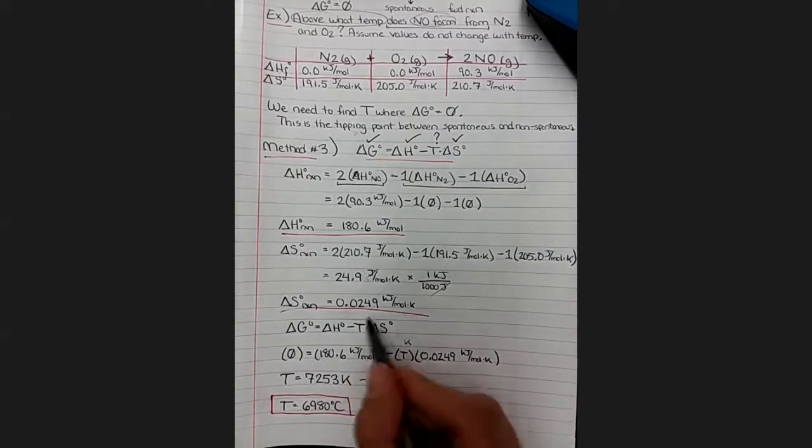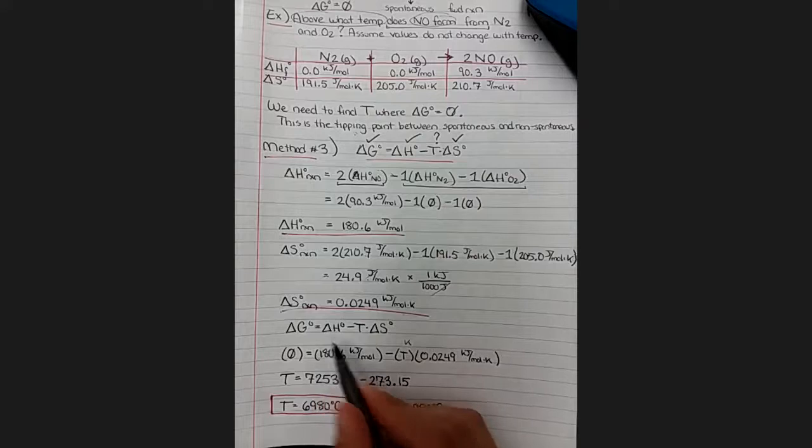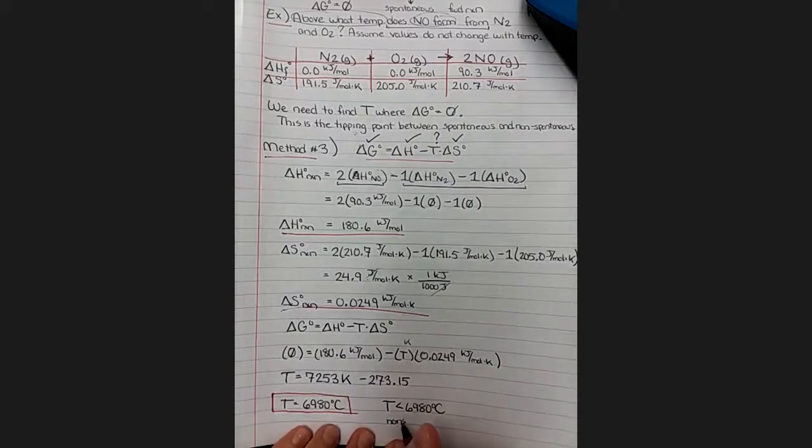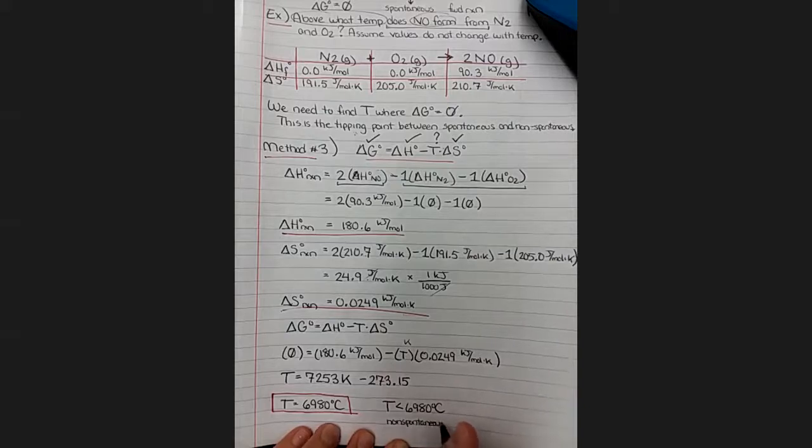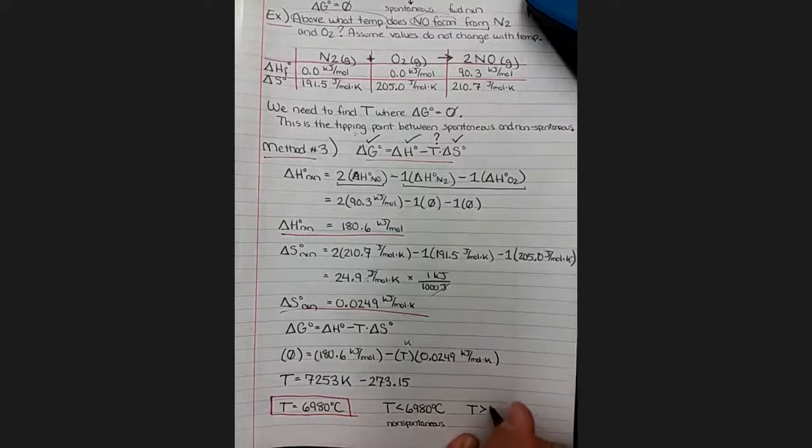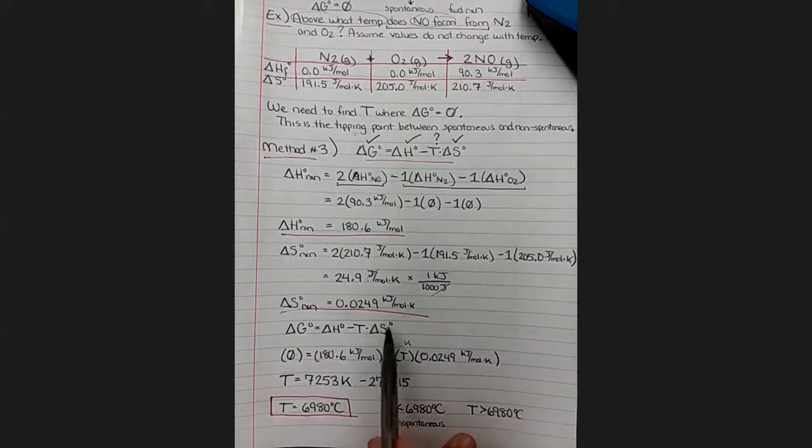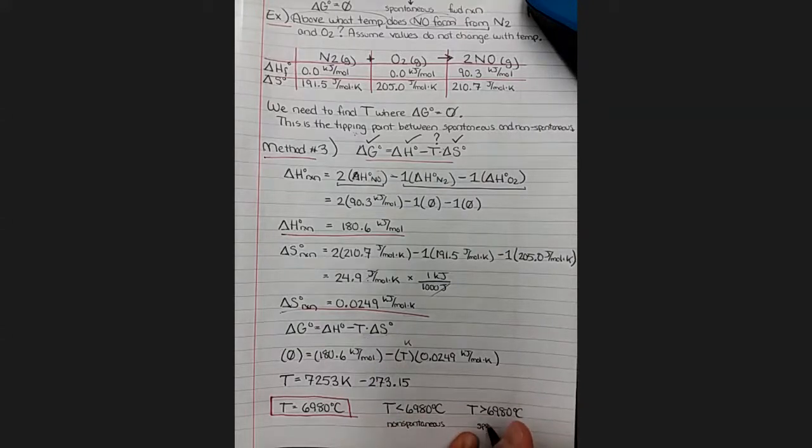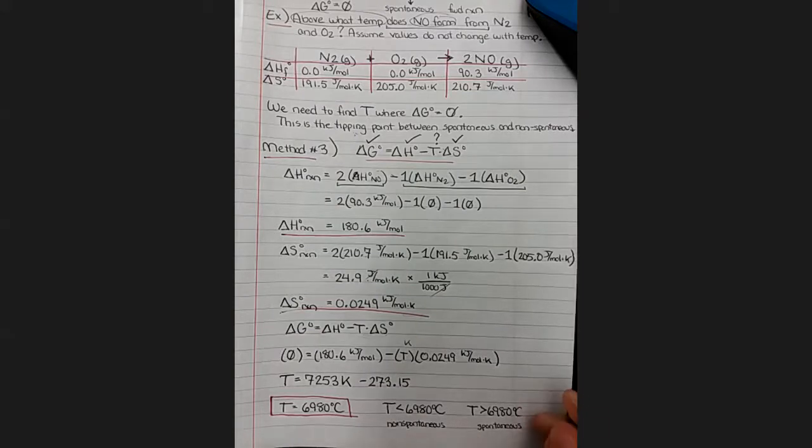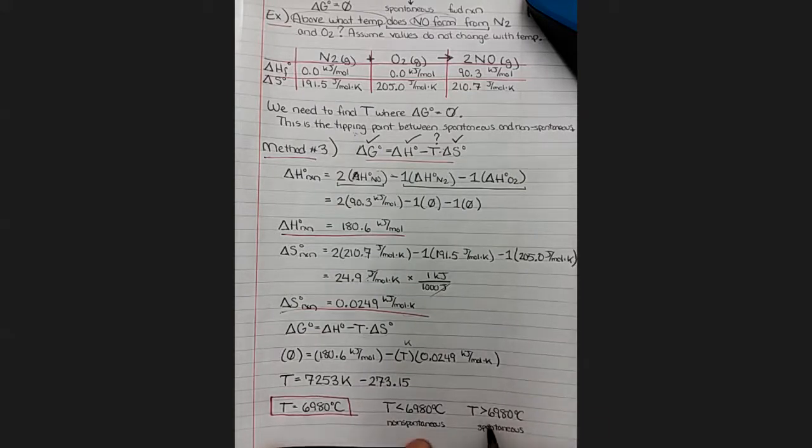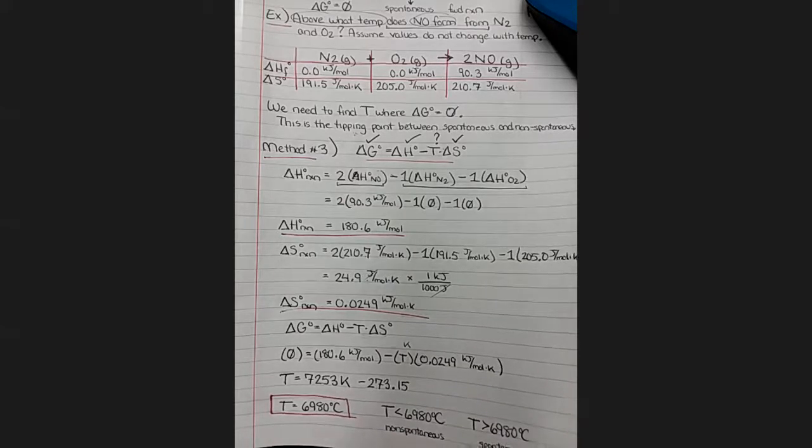When we're less than that temperature, that means that this term is going to be small and delta G is going to be positive, so smaller than this temperature is going to be non-spontaneous. And if I am higher than this temperature, that means I'm going to have a large value over here, a large negative value, and you'll have spontaneous conditions.